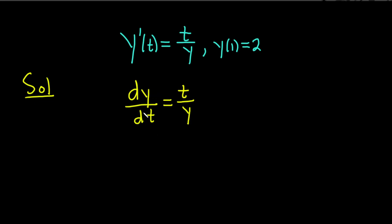Alright, so now what we can do is we can separate the variables. We want to get all of the y's together on one side and all of the t's together on one side, together with a dy and the dt respectively. So we can use cross multiplication here. So we get y times dy equals t times dt.